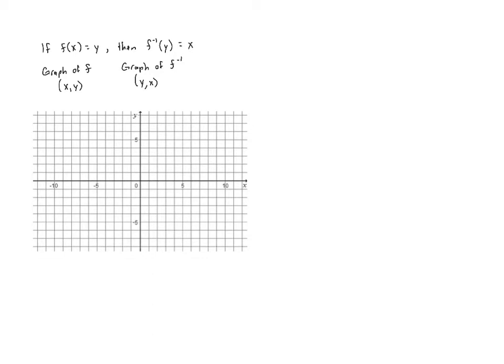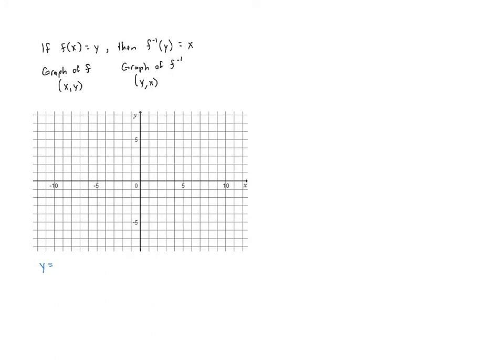Let's suppose we have some function f of x. And let's suppose that the graph of this function had the points 0 comma 2, 1 comma 3, and 2 comma 6 on the graph.